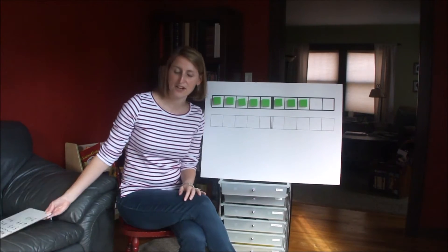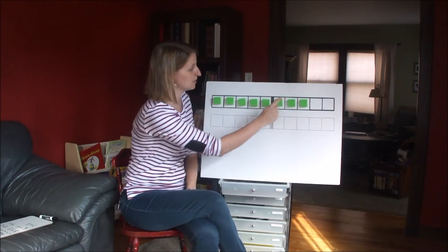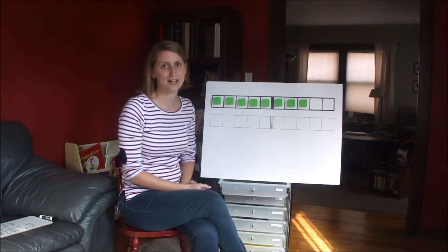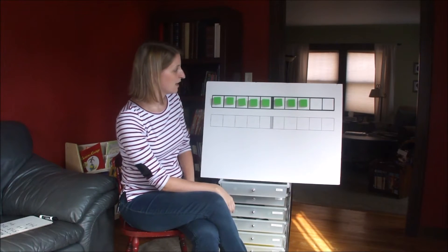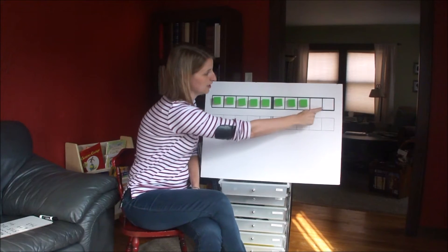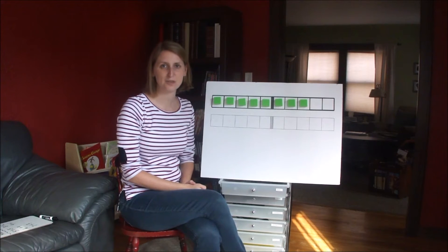So first let's take a look at the 10 frame. What we'll be focusing on this week is the number of full boxes and the number of empty boxes. Since there are 10 squares in the 10 frame, if there's 8 boxes full and 2 empty, this shows us at a glance that 8 plus 2 equals 10.